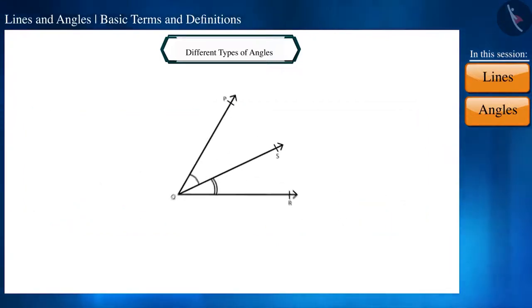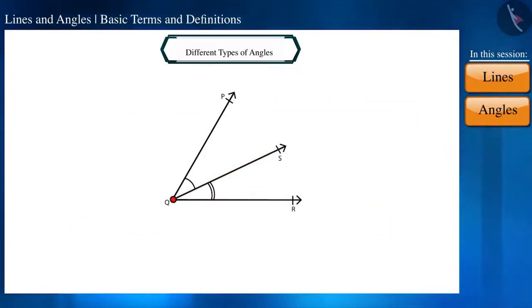Let's move ahead. Friends, if two angles have a common vertex, a common arm, and their non-common arms are on different sides of the common arm then we call such angles as adjacent angles.